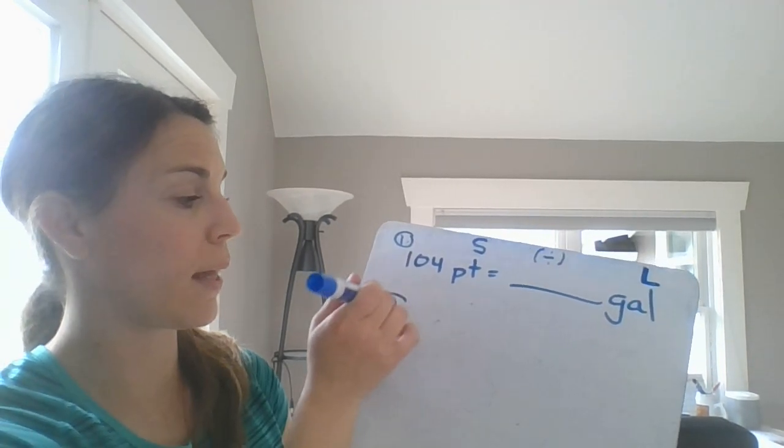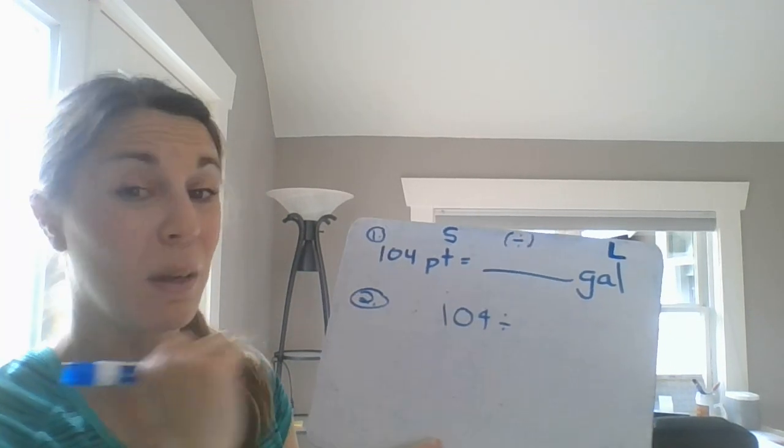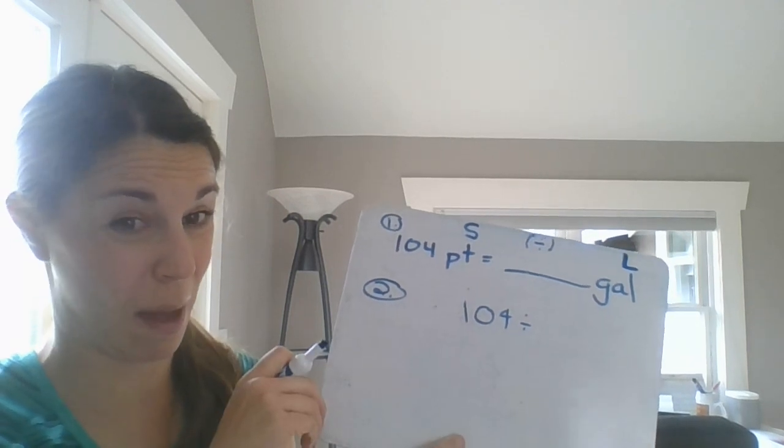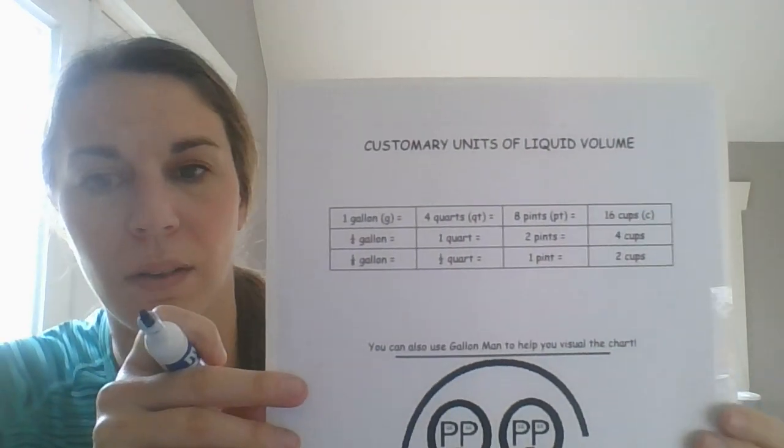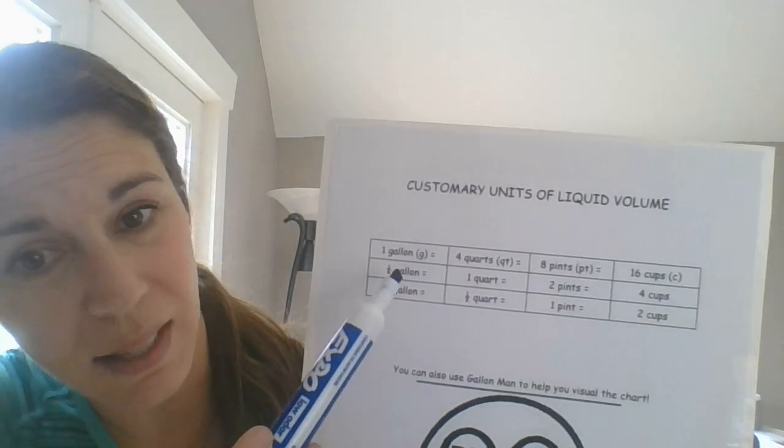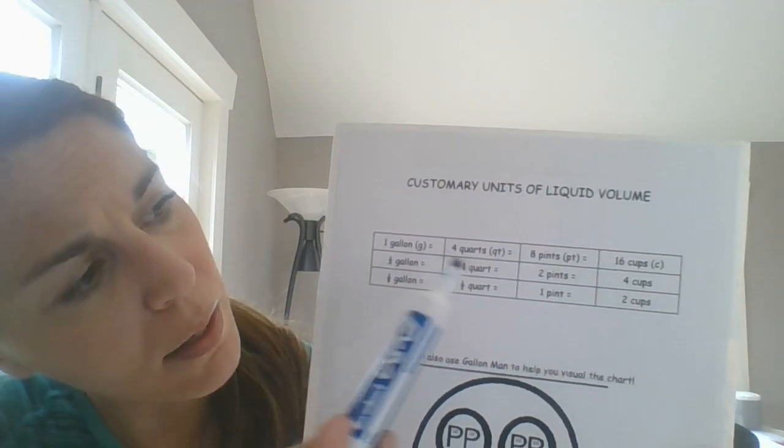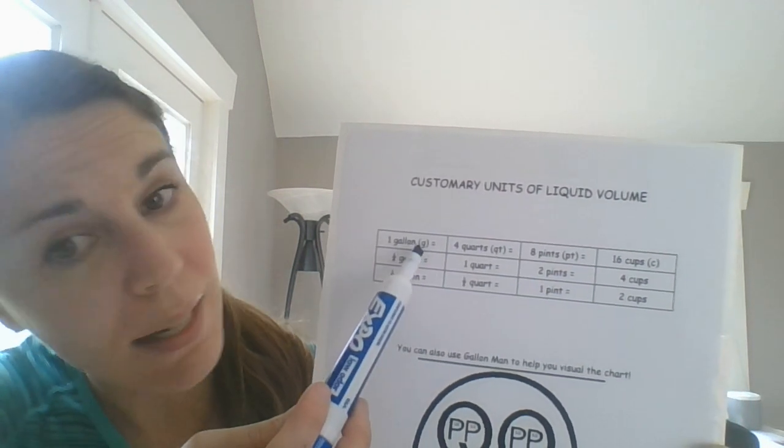Step two is I'm writing that expression. So I'm going to do 104 divided by, and then this is where we have to use our chart and get that magic number. So I need to figure out how many pints are in one gallon. So I need to know how many pints are in one gallon. So I'm going to hold this up. So again, you can go to your chart. So I would probably go to the top one because it says one gallon and just go across. Oh, eight pints. So it takes eight pints to get one gallon. Right.